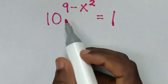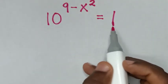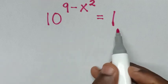Hello, 10 to the power of 9 minus x squared equals 1. We need to find the values of x from this equation.